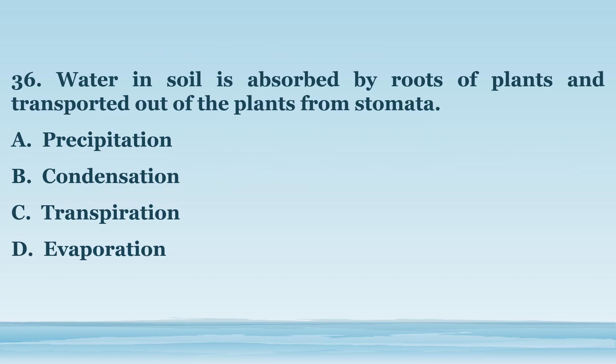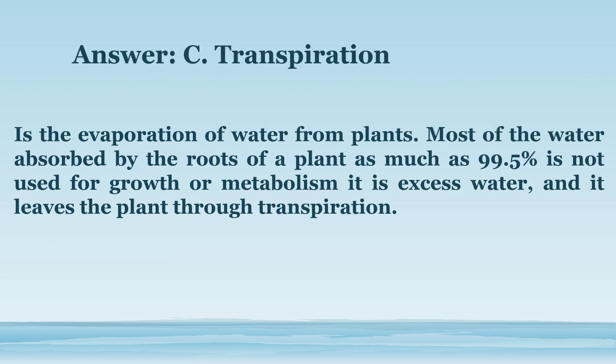Number 36. Water and soil is absorbed by roots of plants and transported out of the plants from stomata. A. Precipitation. B. Condensation. C. Transpiration. D. Evaporation. The answer is letter C. Transpiration. Is the evaporation of water from plants. Most of the water absorbed by the roots of a plant — as much as 99.5% — is not used for growth or metabolism; it is excess water and it leaves the plant through transpiration.